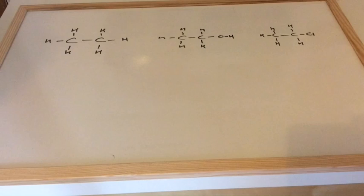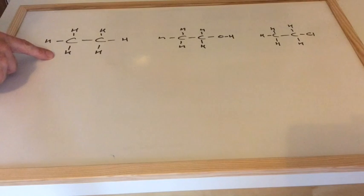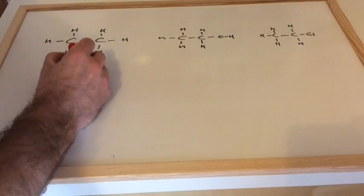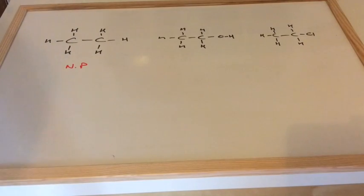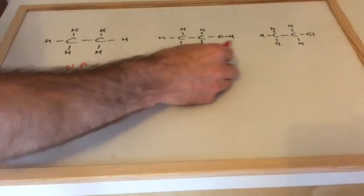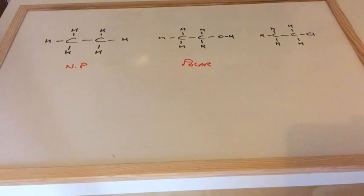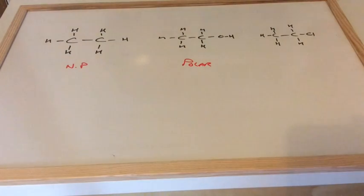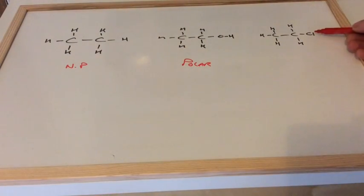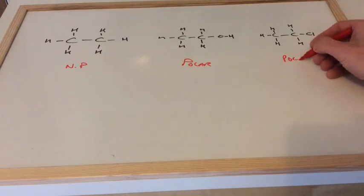The first thing we have to establish is, are the molecules polar or non-polar? We'll look at ethane first. This is a non-polar molecule. Ethanol, well because of this OH at this end, it's going to be polar. And the chloroethane, again because of the chlorine that's breaking the symmetry of the molecule, this is polar as well.